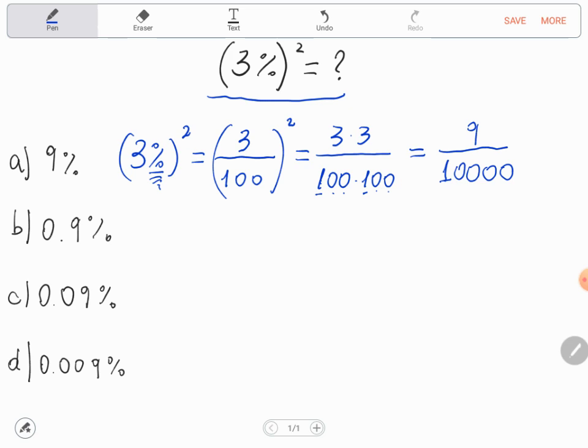But see all the alternatives A, B, C, and D. All of them are with the symbol percent. And we know the symbol percent means divided by 100. But the number 9 is divided by 10,000. If we cut these two zeros here we have 9 over 100.